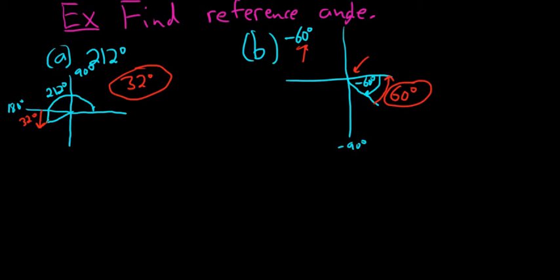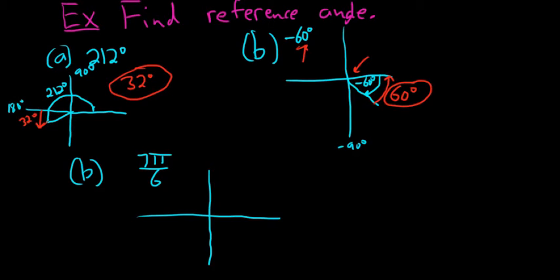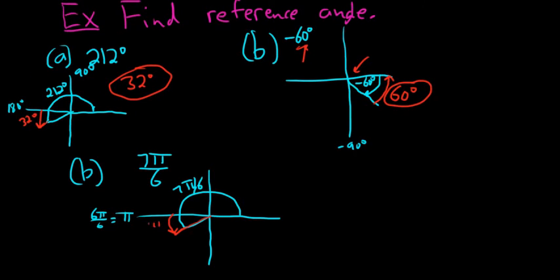Next example: 7π/6. Drawing the picture — I think of pi as 6π/6, so 7π/6 is just past pi, down in the third quadrant. The reference angle is the positive acute angle made with the terminal side of theta and the x-axis. The difference between 7π/6 and 6π/6 is π/6, so the reference angle is π/6.